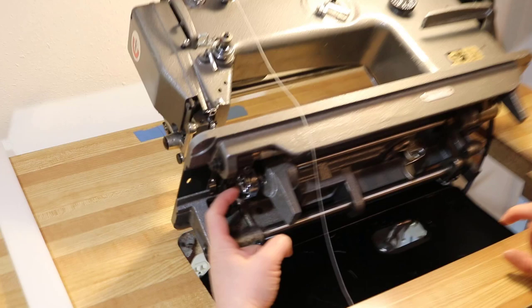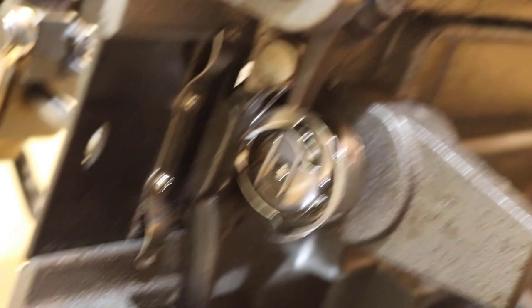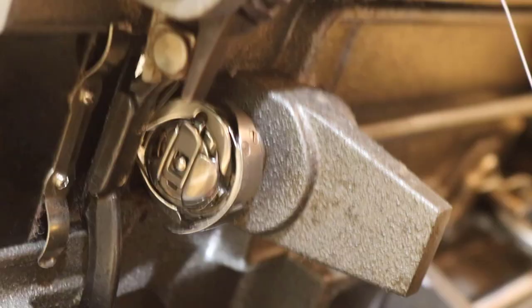So this is where the bobbin is sitting and when I have the needle in the right position on top, then I can just reach underneath the table and pull this little lever on the bobbin case.